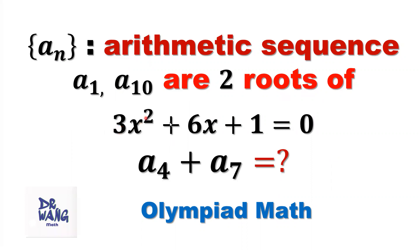3x squared plus 6x plus 1 equals 0. We want to find the sum of the fourth term plus seventh term, A4 plus A7.